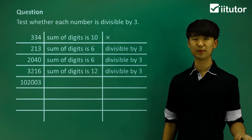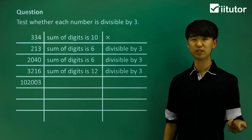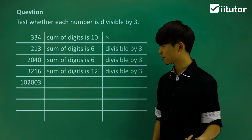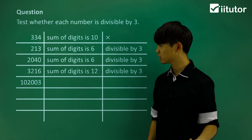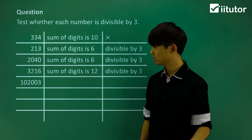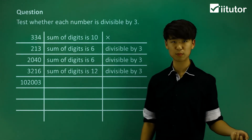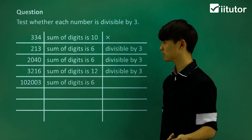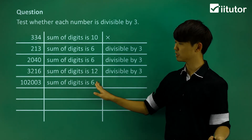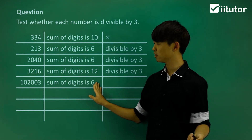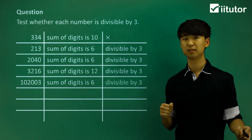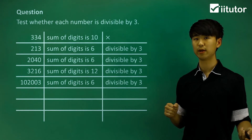We have a really large number now: 102,003. The sum of digits here is simply just 1 plus 2 plus 3. That gives us a sum of digits equal to 6. So that's divisible by 3, then of course the big number is also divisible by 3.